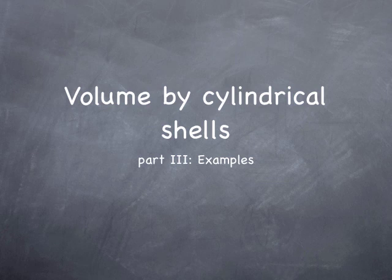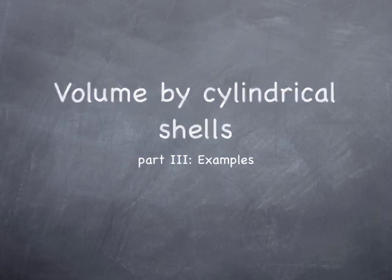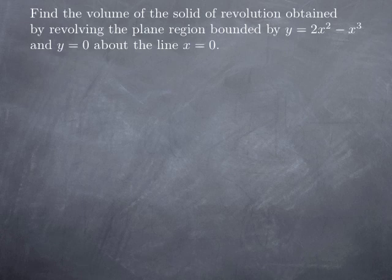We're going to go through a few more examples of calculating volume of solids of revolution using cylindrical shells. Let's say that we want to find the volume of the solid of revolution obtained by revolving the plane region bounded by y equals 2x squared minus x cubed and y equals 0 about the line x equals 0, in other words about the y-axis.